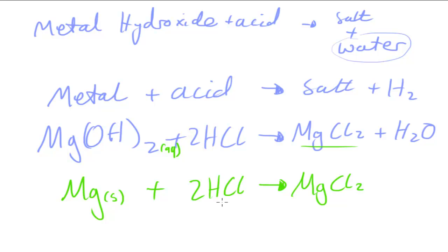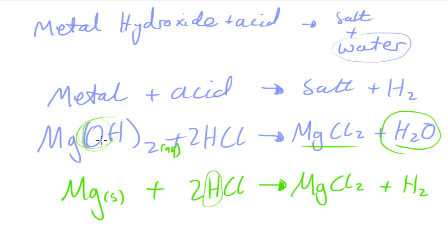There is no oxygen in the metal-acid reaction, so no water is formed. The two hydrogen atoms from HCl have to go somewhere — they are released as gas molecules. Each hydrogen molecule is H₂, so this reaction produces H₂ gas instead of liquid H₂O.